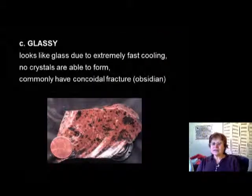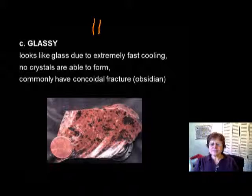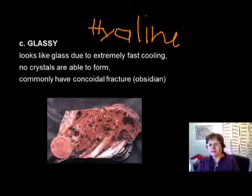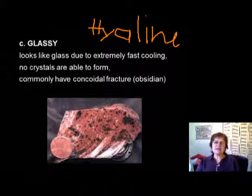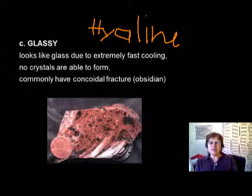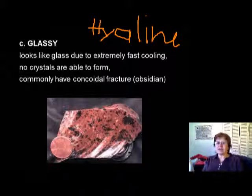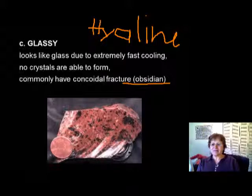The next texture is glassy, also called hyaline. Glassy texture means the magma reached the surface and cooled down instantly so basically no crystals grew — it has an amorphous internal structure. What you see is volcanic glass. Depending on the chemical composition, which is mostly very high-silica granitic composition, you get dark black, red, or sometimes blue glass. The most common is black, but red occurs too. This rock is obsidian.